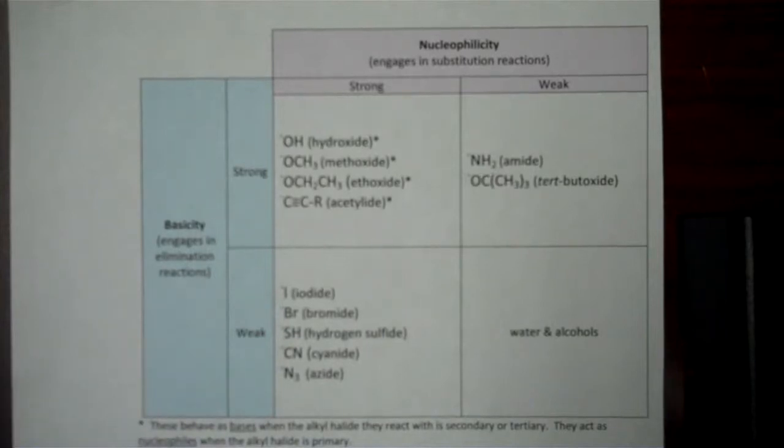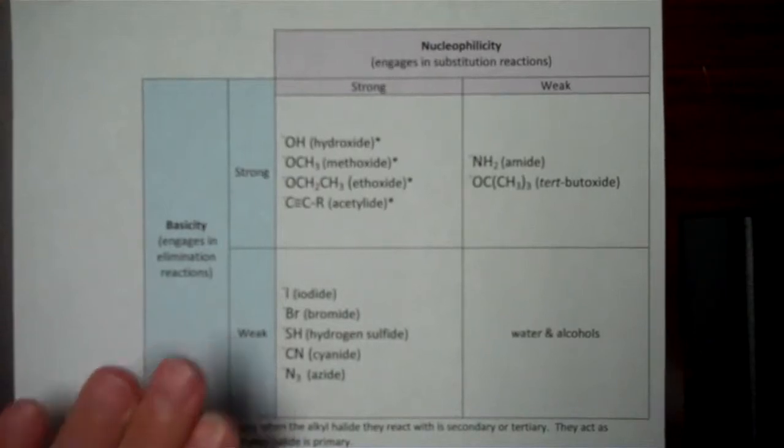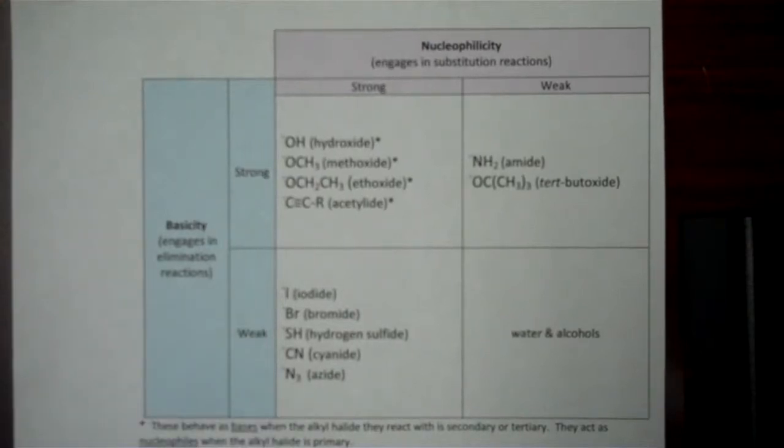This document is called the nucleophilicity versus basicity chart, and you can find a copy of this in D2L. You might want to print out your own copy because I don't think you can necessarily read all the details here on this video, but I wanted to explain the importance of this document.